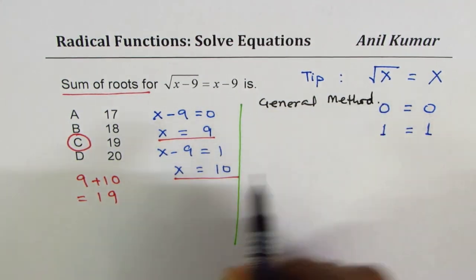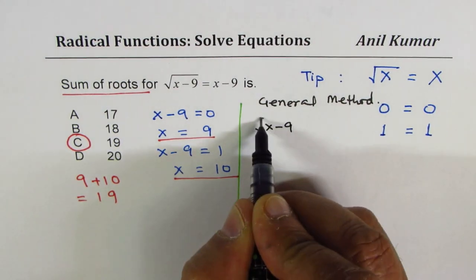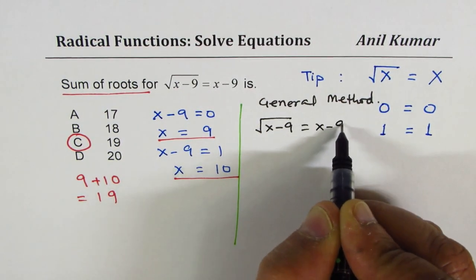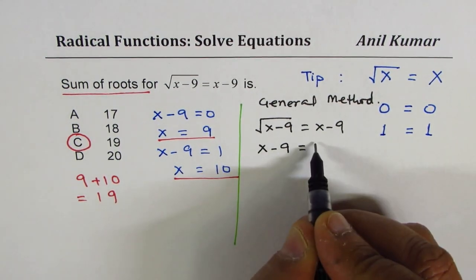General method: it will take time but it's a good solution. If you are given square root of x minus 9 equals x minus 9, you can square both sides and write it as x minus 9 equals x minus 9 whole square.